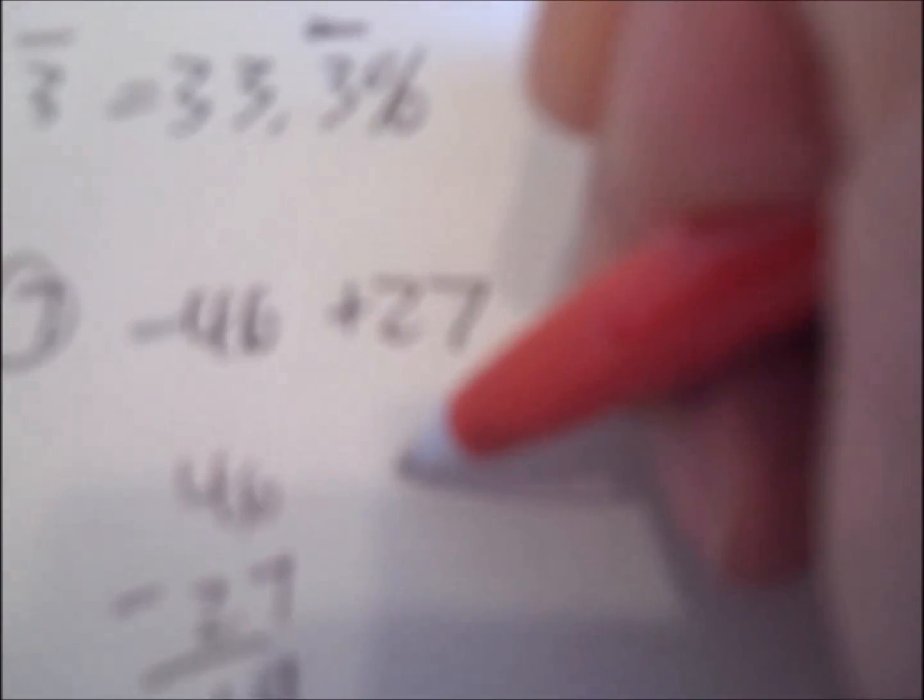When there are opposite signs, negative and positive, find the difference. 46 minus 27 is 19. Your answer should have 19 in it. Pick the sign, negative or positive, of the bigger number. 46 is bigger. It's negative, so your answer should be negative.